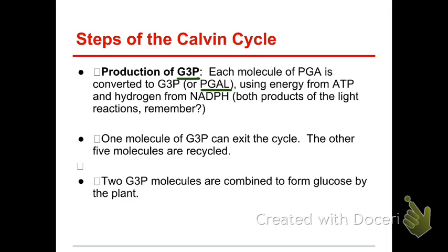PGAL stands for phosphoglyceraldehyde, whereas G3P stands for glyceraldehyde-3-phosphate. It just basically tells you where the phosphate groups attach — which carbon it's attached to; it's attached to the third one. It looks the same though — we're only focused on the carbons. What we've changed are all the different side chains, like the hydroxyl groups. The phosphate gets added and then removed. All those changes require energy, and we get the energy from our ATP molecule and our NADPH molecule. That supplies the energy and the hydrogen needed to convert PGA to PGAL. For all intensive purposes, it looks the same, because it's still just three carbons.